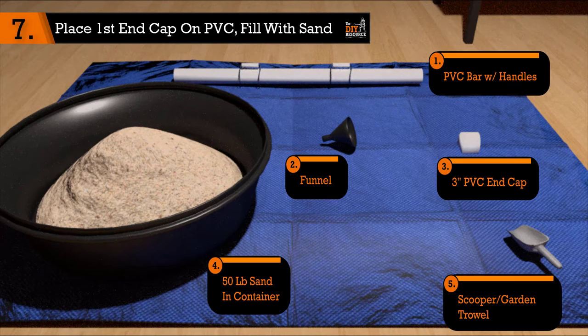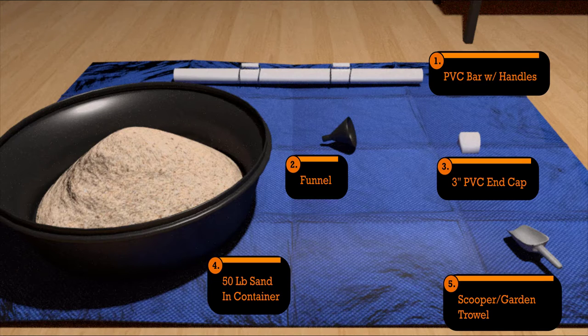Step 7. Place first end cap on PVC and fill with sand. For this step, you will need your bucket filled with sand, your scooper slash garden trowel, your funnel, one of the PVC end caps, and the long 6 foot section of PVC that you cut in Step 1 with the handles.